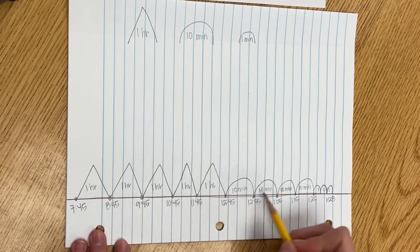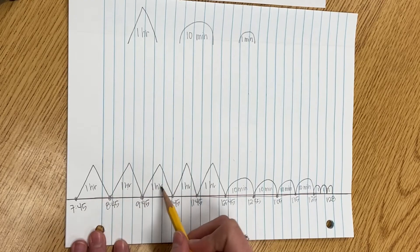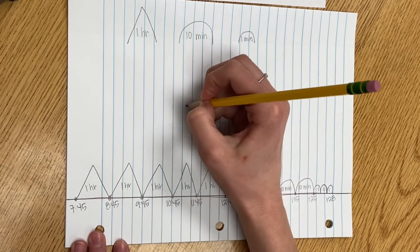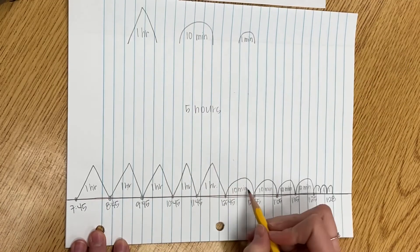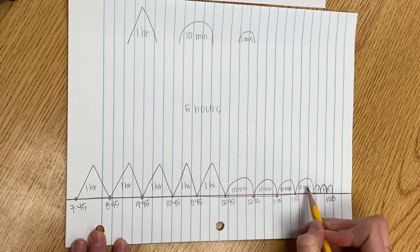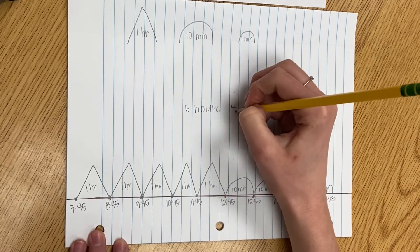So now I can total up all of my elapsed time. I have 1, 2, 3, 4, 5 hours. 10, 20, 30, 40, 41, 42, 43 minutes.